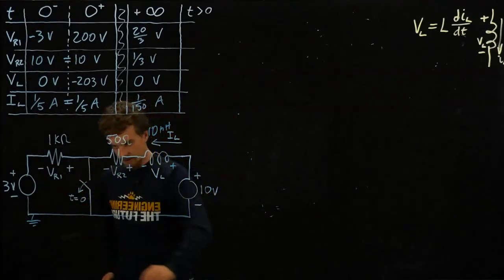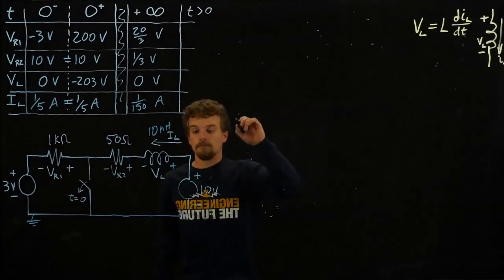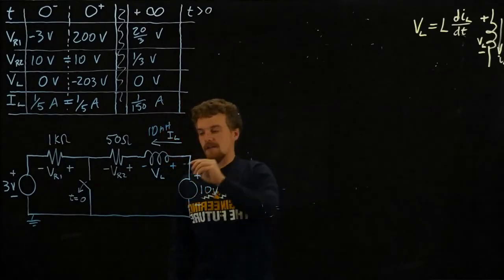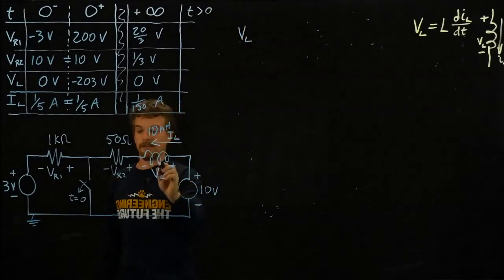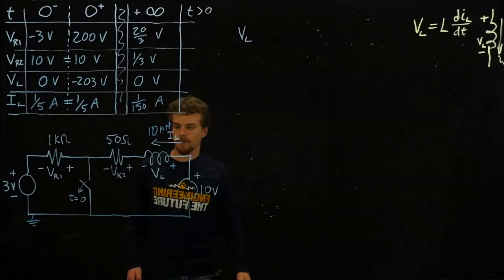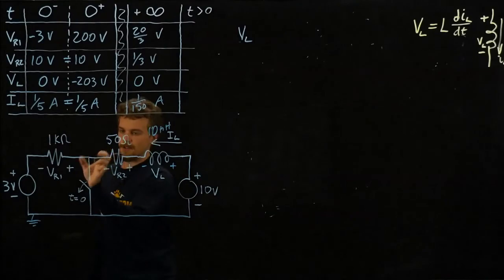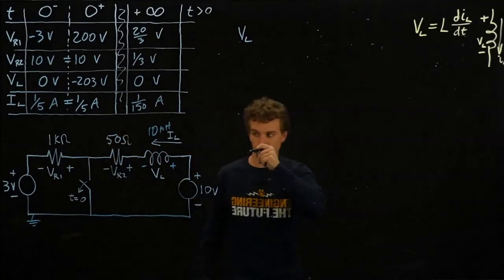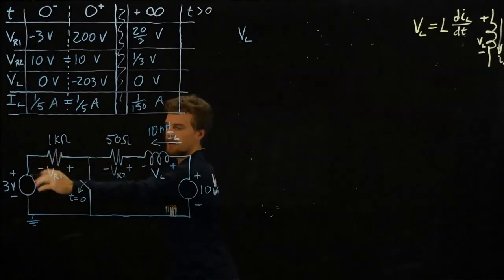We'll sum the voltages around this loop. Let's just call it VL for now. So you have VL plus VR2 plus VR1. But let's shorten our problem right away by saying that once the switch opens, these resistors are in series and their total value is 1050 ohms, and they share a common current, IL.